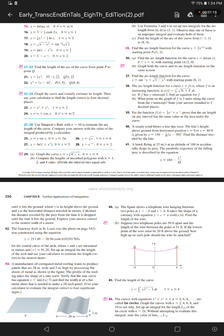The arc length function for a curve y equals f of x, where f is an increasing function, is s of x equals the integral from 0 to x of the square root of 3t plus 5 dt. Part A: If f has y-intercept 2, find an equation for f.